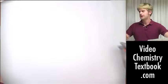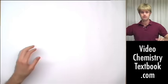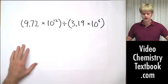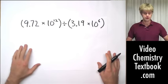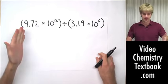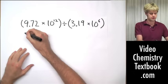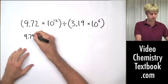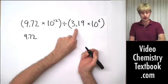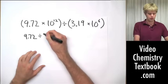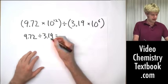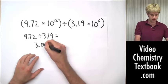We use this exact same process when we're doing division, except for one difference, and that's that we subtract the exponents. Here's a division problem. Again, we break it into two smaller problems. So the first thing is 9.72 divided by 3.19, and that gives me 3.04.